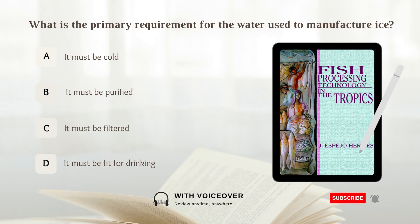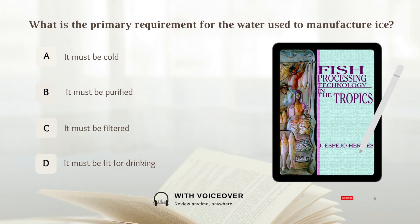What is the primary requirement for the water used to manufacture ice? A. It must be cold. B. It must be purified. C. It must be filtered. D. It must be fit for drinking. The answer is D — it must be fit for drinking. The water used to manufacture ice must be fit for drinking.